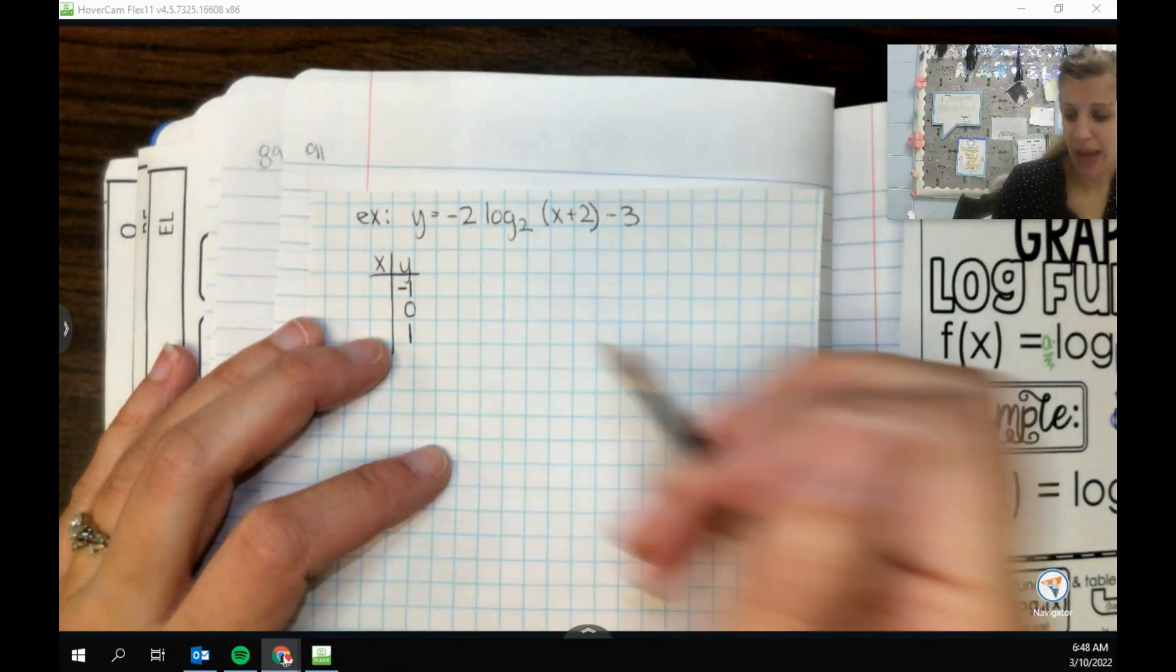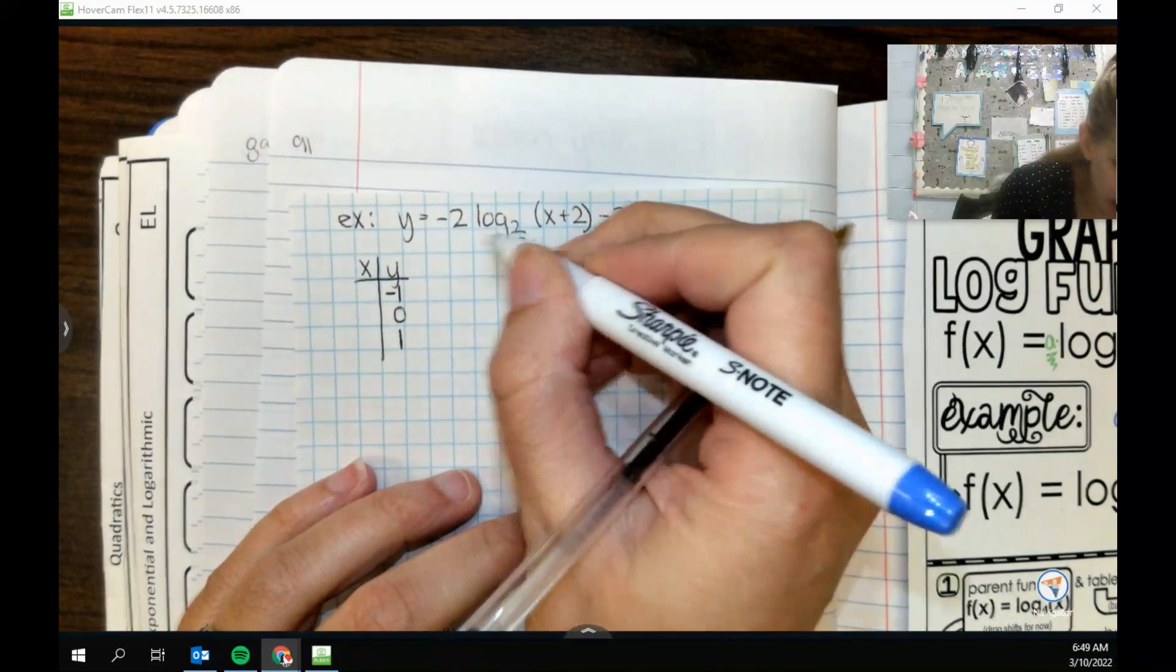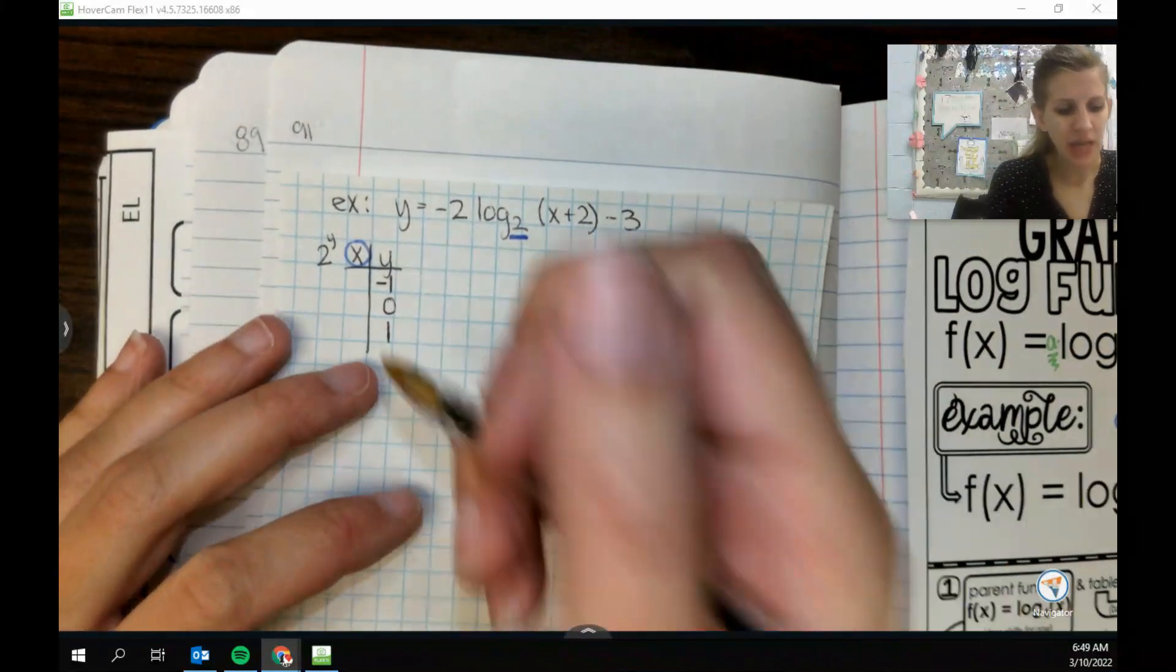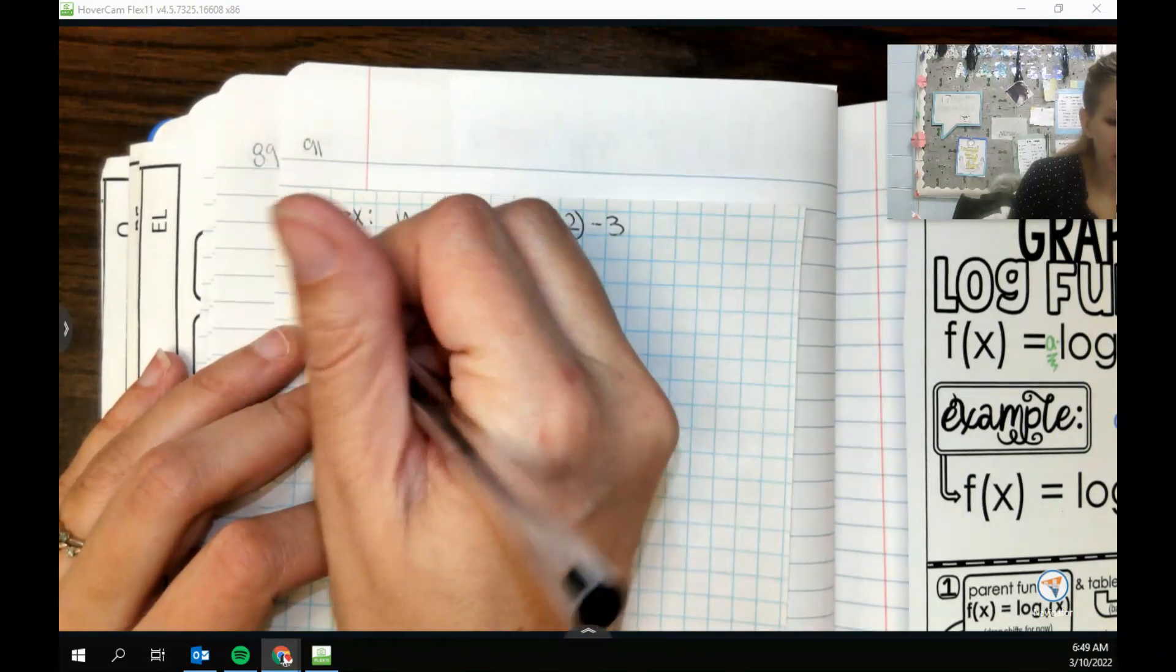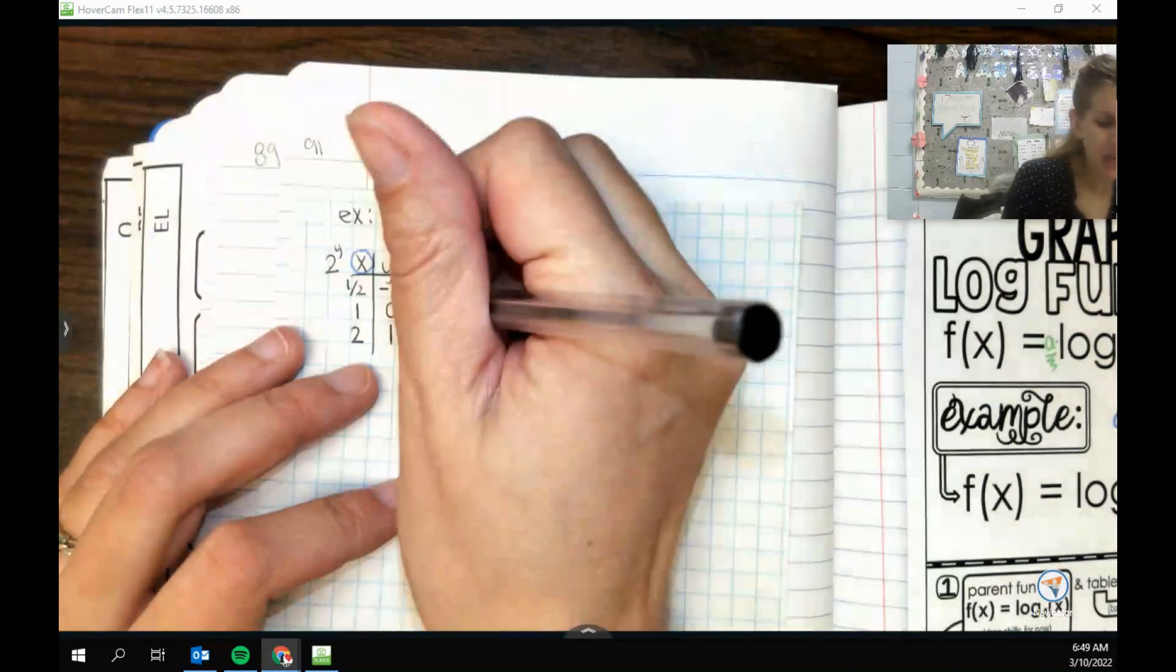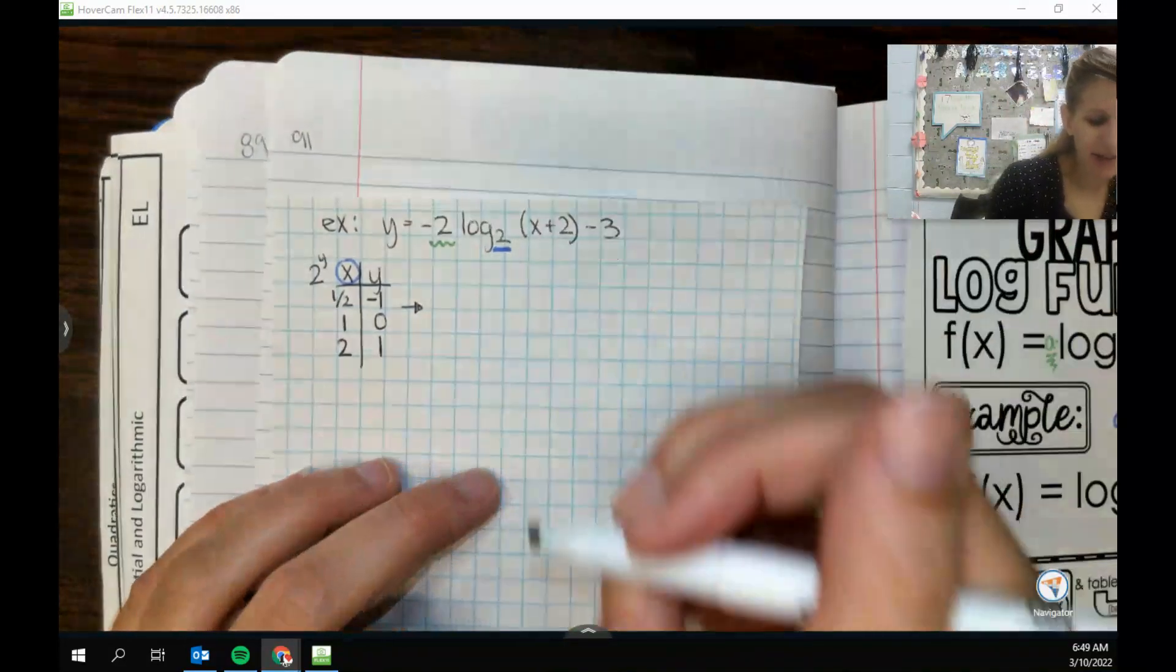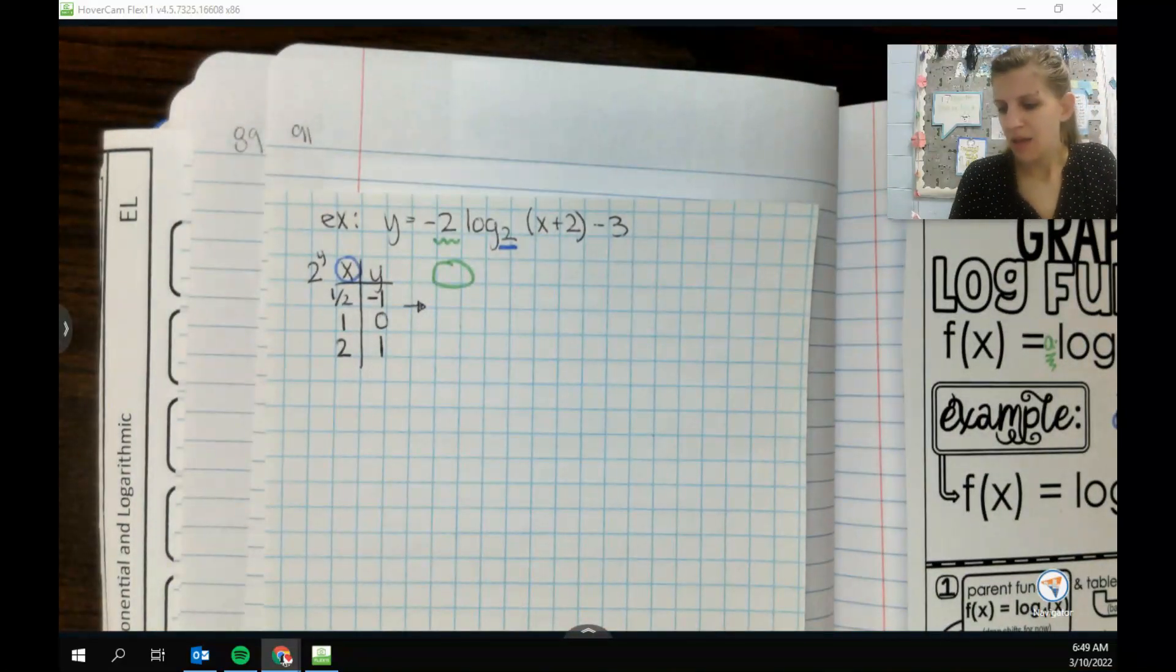And then we're going to use our base. So base happens first. We're going to use our base for x. Okay, so we're doing 2 to the y power. So when I plug in negative 1, we flip. When I plug in 0, it's always 1. When I plug in 1, I stay the same. And now we need to take it through a series of transformations. So the first thing that I notice is actually out front, I do have an a value.